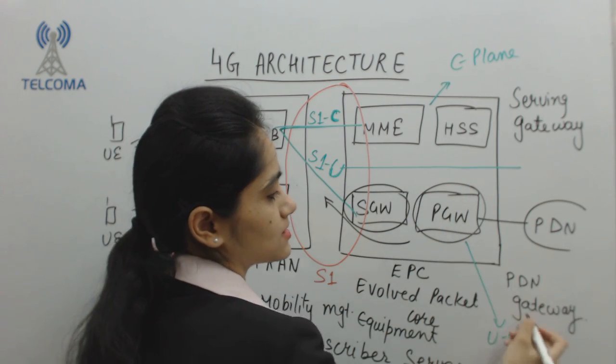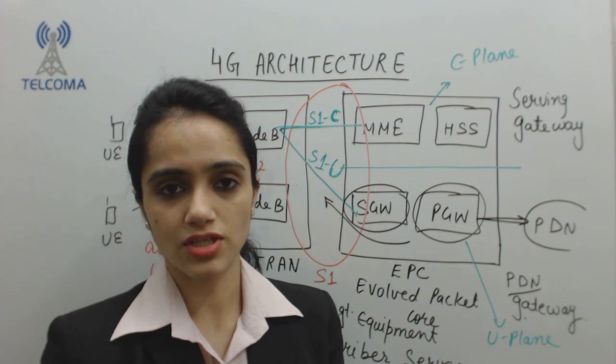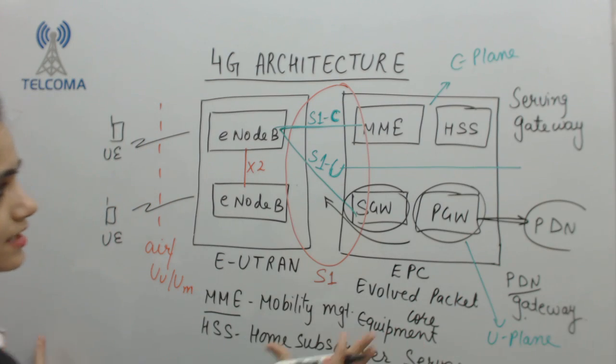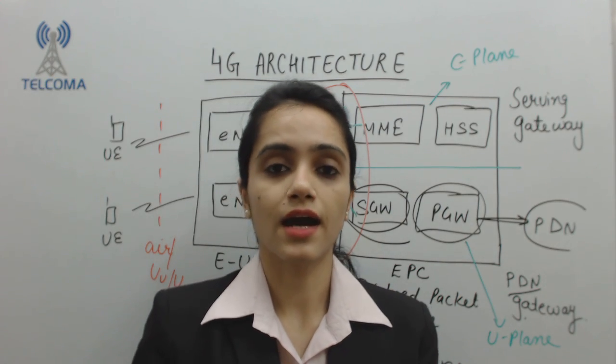PGW, which is PDN Gateway, is a gateway with the external network through which we require to fetch the packets. This is the architecture of 4G which has to deal with data and high speed.